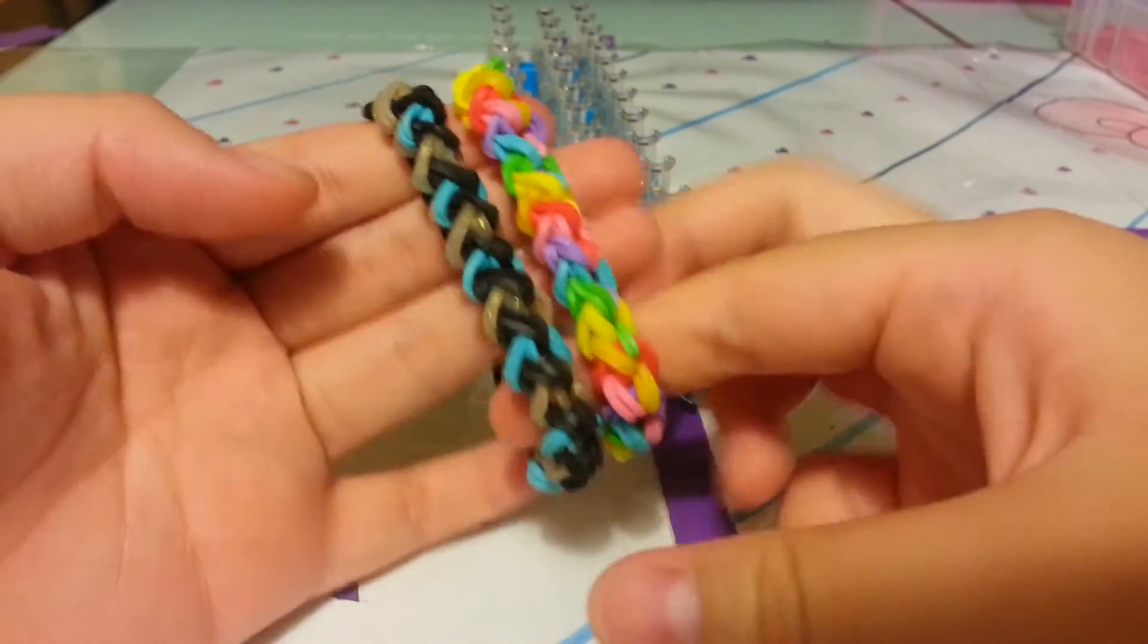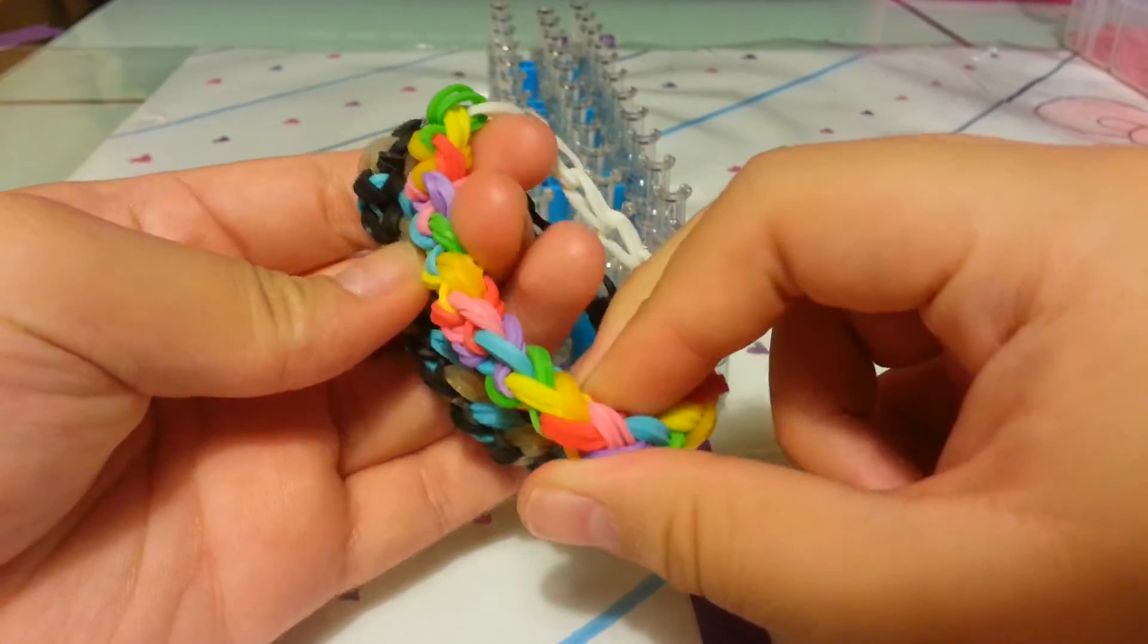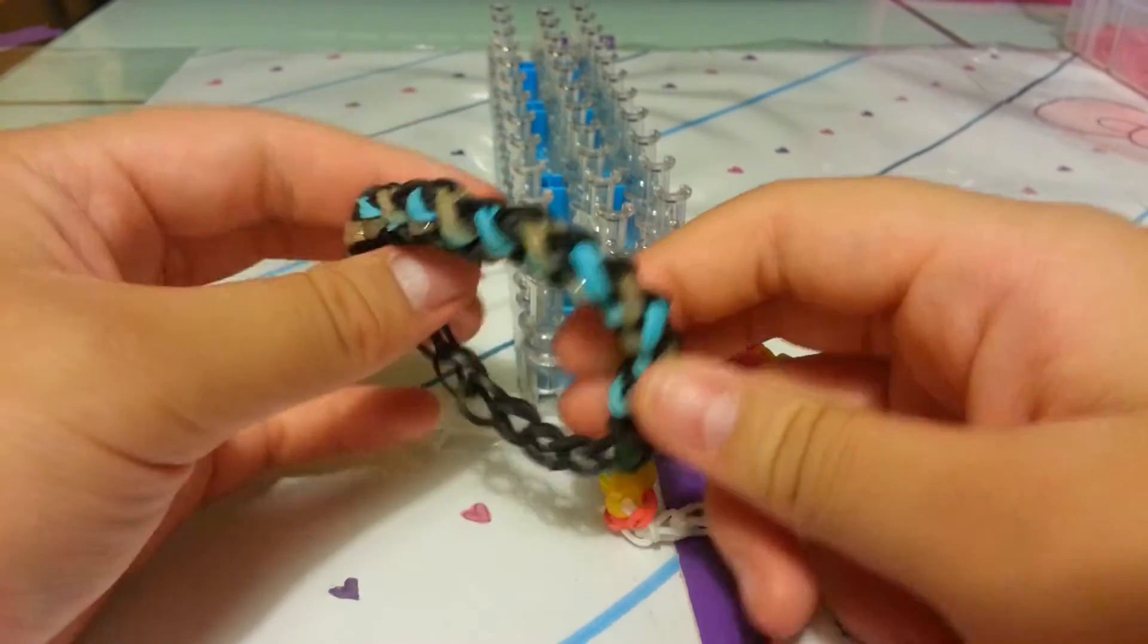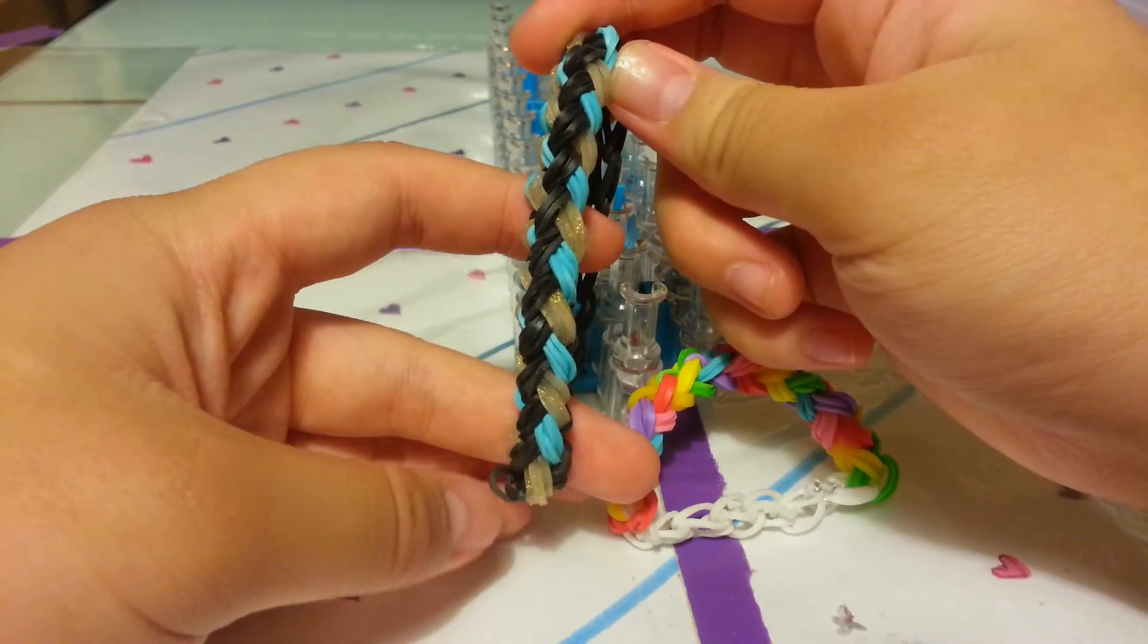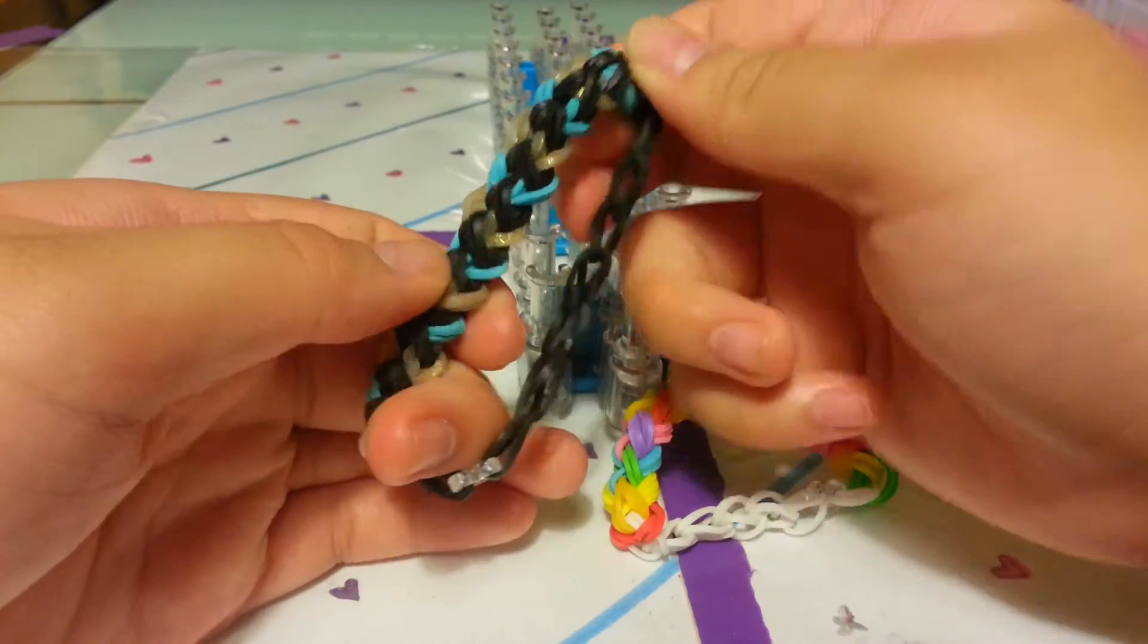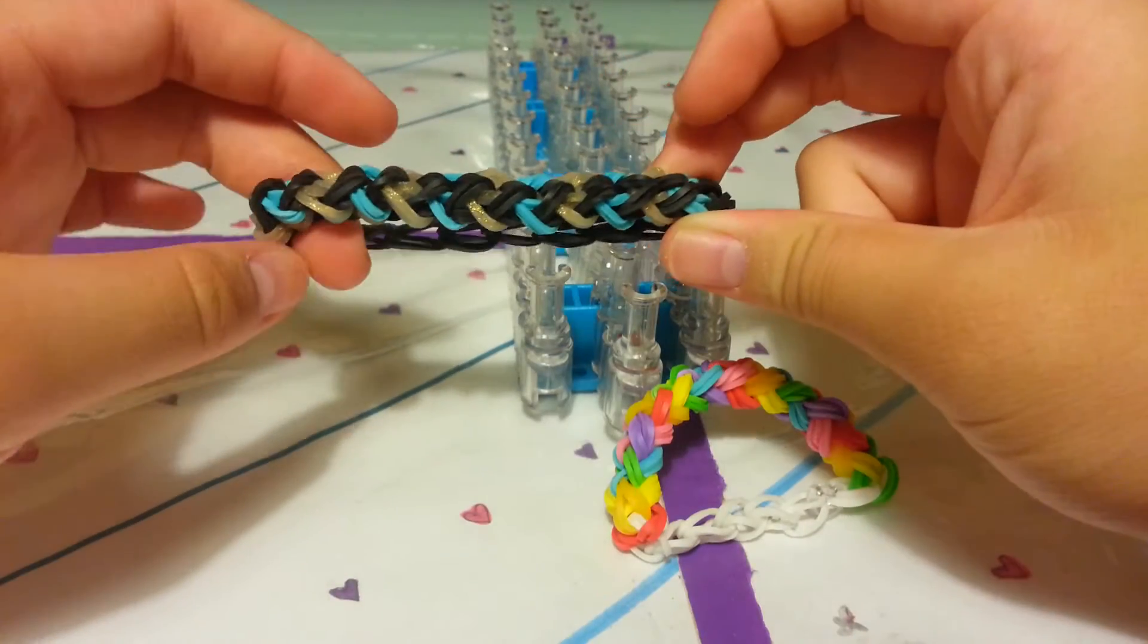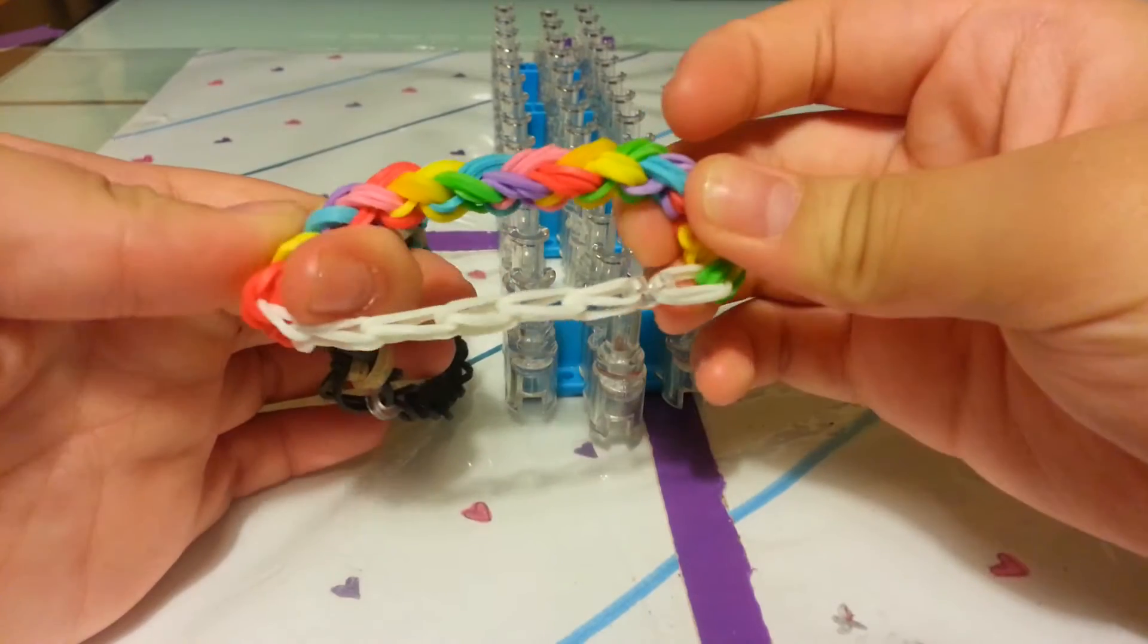This is called the Split Braid. This kind of looks crazy right now but actually looks better. The back side is actually a braid, so I call it the Split Braid because half of it is a braid and the other half isn't. This is the signature side and here it is in rainbow.